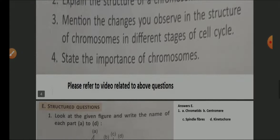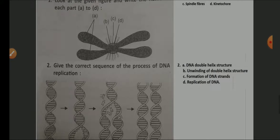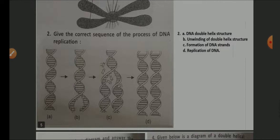Part E — structured questions. Look at the given figure and write the name of each part A to D: A is chromatid, B is centromere, C is spindle fibers, and D is kinetochore. For the sequence of DNA replication: A is the DNA double helix, B is unwinding of the double helix, C is formation of new DNA strands, and D is replicated DNA — replication is completed.